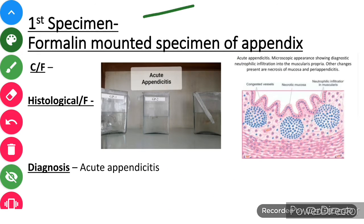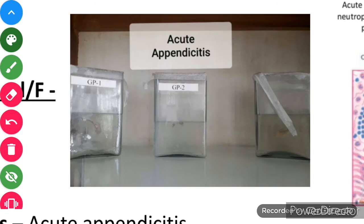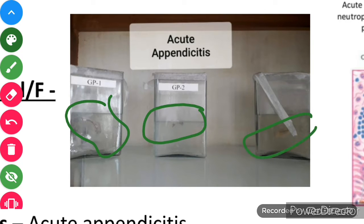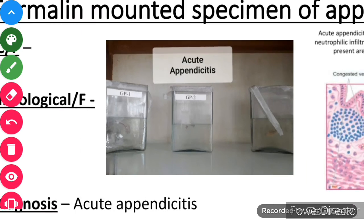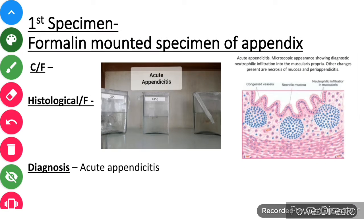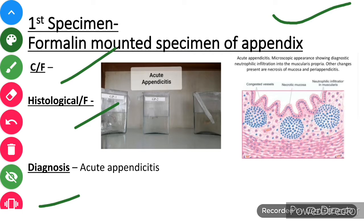The first specimen is the appendix. You can see here a very small finger-like appearance. For all of these specimens, you have to write four things: first, its name; then its clinical features; then histopathological features; plus the final diagnosis.